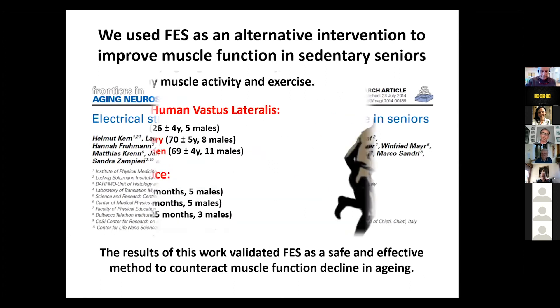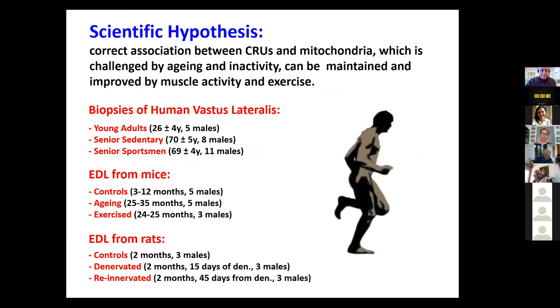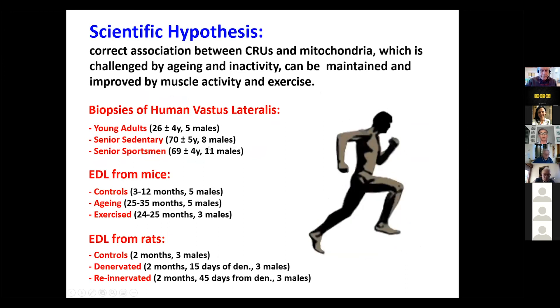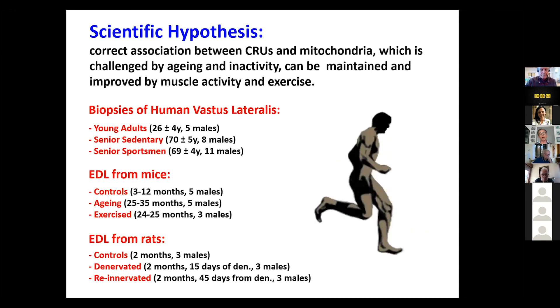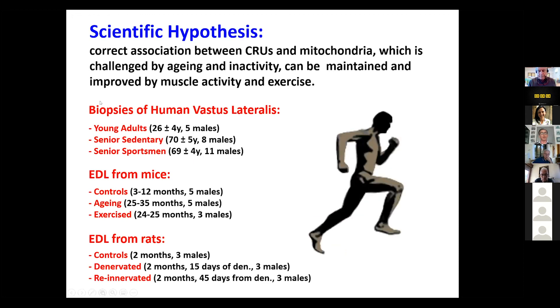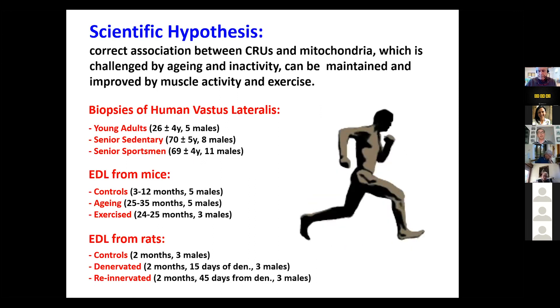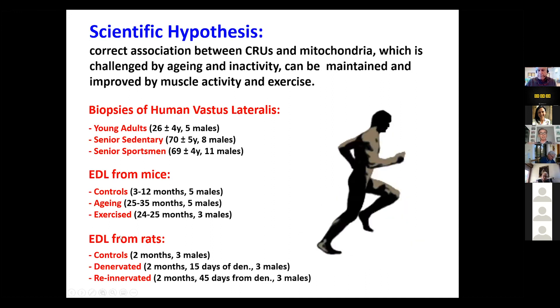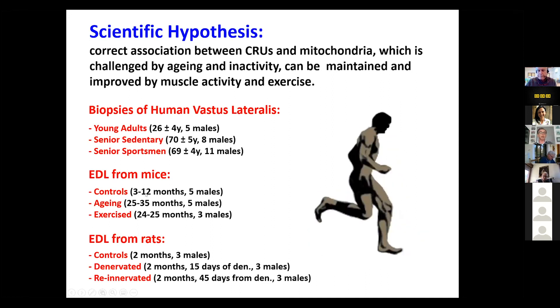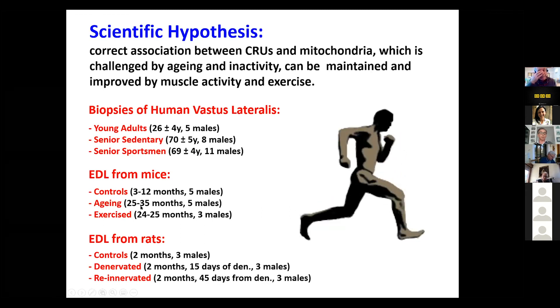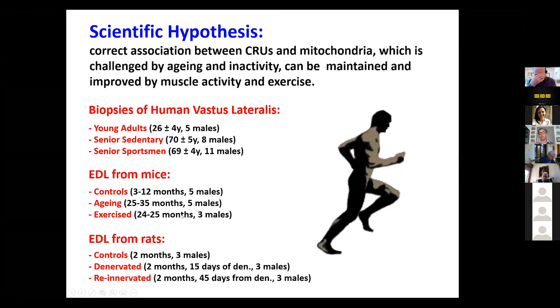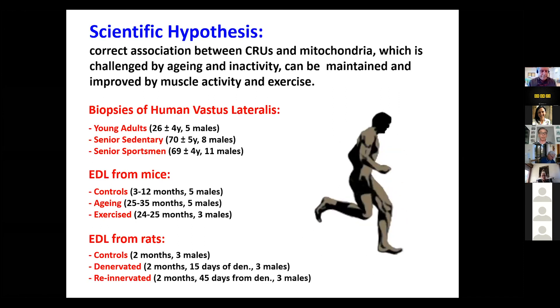I wanted to conclude with this slide, but I don't want to take away the work of Laura. This project will be presented this afternoon in a talk of 20 minutes by Laura Pietrangelo. But what we did together with the people in Vienna and in Padova, we developed different lines. First we analyzed biopsies from human vastus lateralis for young adults, senior sedentary people, and senior sportsmen that were practicing different sports for at least half of their life. Then parallel studies here, we studied mice, control mice adult, and then aging mice of 25 months of age, and then exercise mice, mice that ran in wheel cages for one year in the second part of their life. Also we studied EDL from rats, adults in this case, which we denervated and we allowed reinnervation.